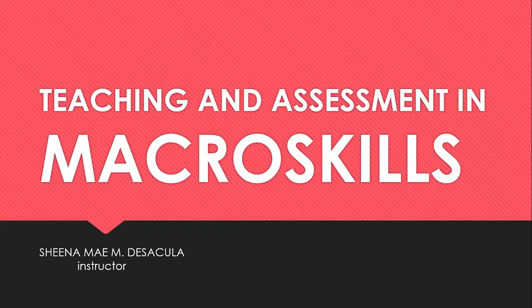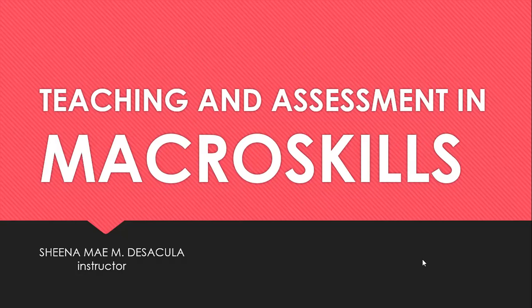Let us discuss what macro skills are. When we say macro, the meaning of macro is being large, thick, or exceptionally prominent. It comes from the Greek word macros. It is the opposite of the word micro.